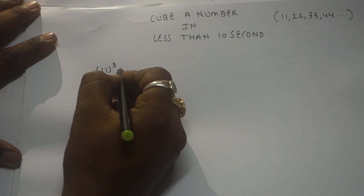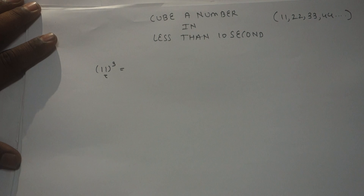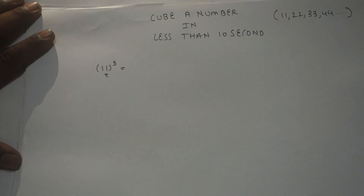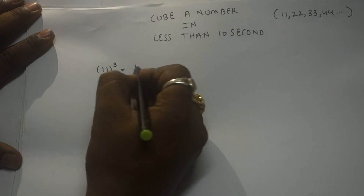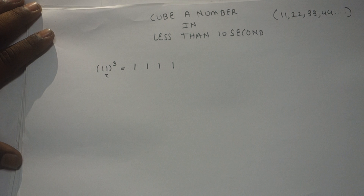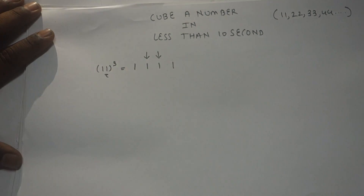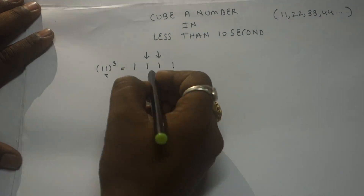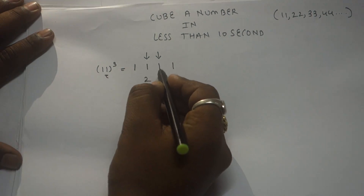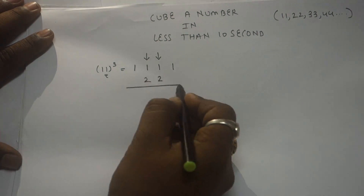Let's find the cube of 11. Step one: what is the cube of 1? It is 1. Write 1 four times — one, two, three, four. Step two: simply double the middle two numbers. Double of this 1 is 2, and double of this 1 is 2.